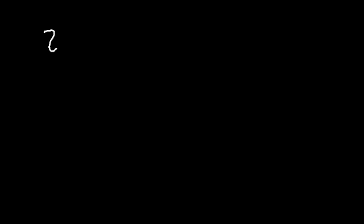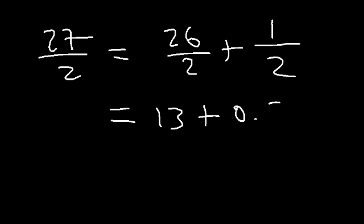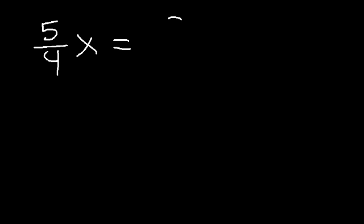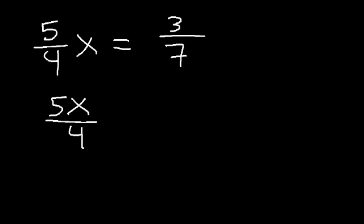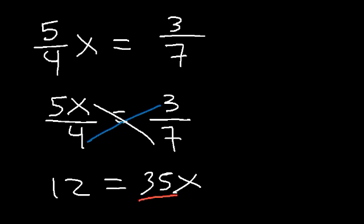If you want to convert 27 over 2 into a decimal, you can break it down to 26 over 2 plus 1 over 2, since 26 plus 1 is 27. 26 divided by 2 is 13, and 1 half is 0.5, so 27 over 2 is 13.5 as a decimal. Now how would you solve this one: 5 over 4 times x is equal to 3 over 7? That's the same as 5x over 4. Whenever you have two fractions separated by an equal sign, you can cross multiply. 4 times 3 is 12, and 5x times 7 is 35x. To isolate x, divide both sides by 35. The answer is 12 over 35.